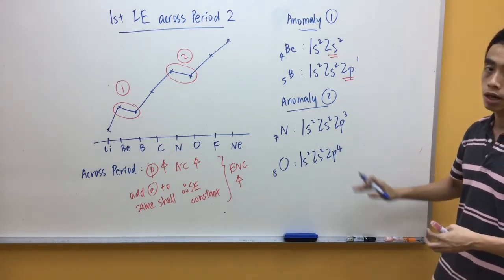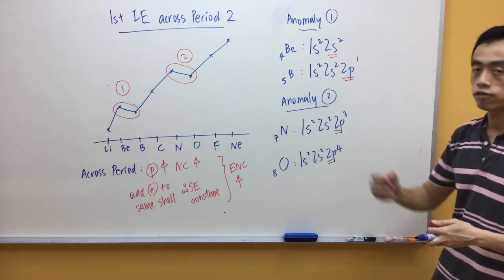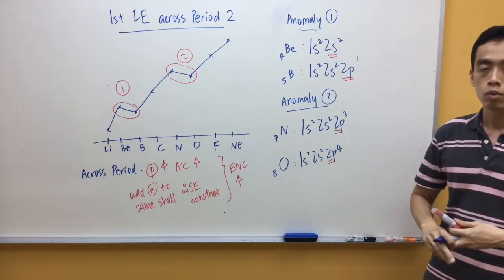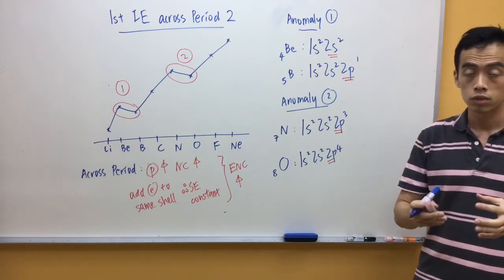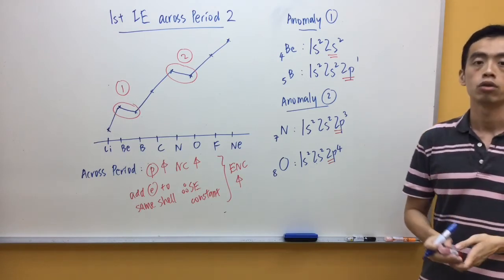Now, in this case, I am removing them from the same subshell, 2p subshell for both nitrogen and oxygen. So, what we need to do is we need more detail to draw the electron in a box diagram to see how the electrons are arranged.